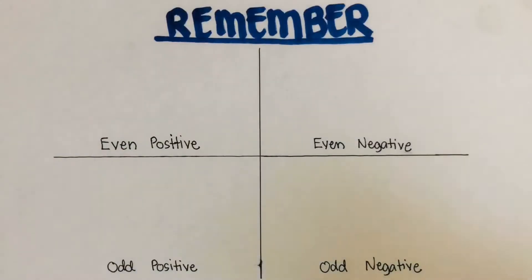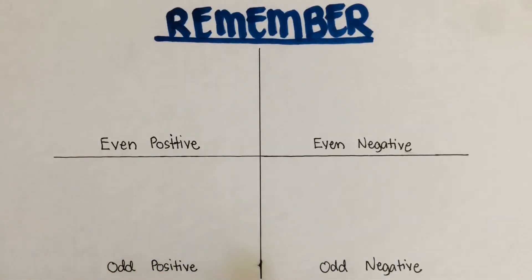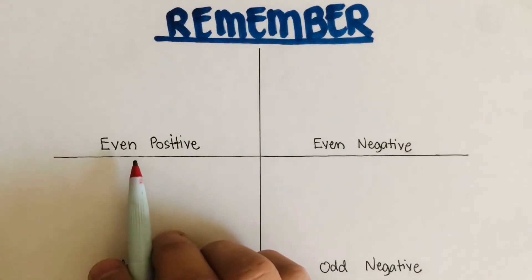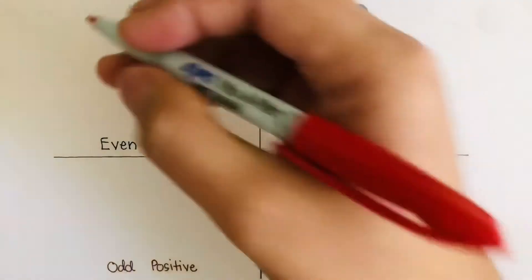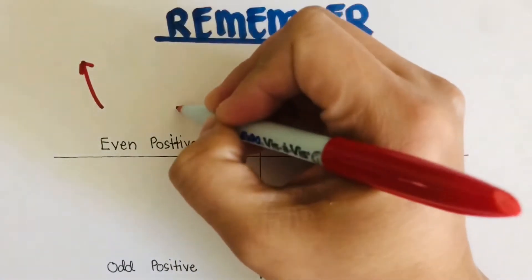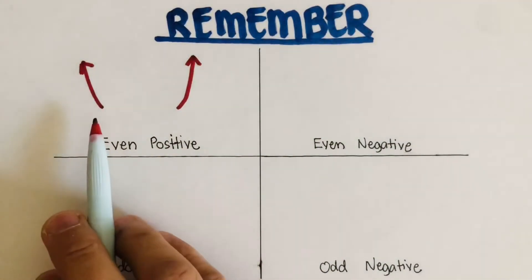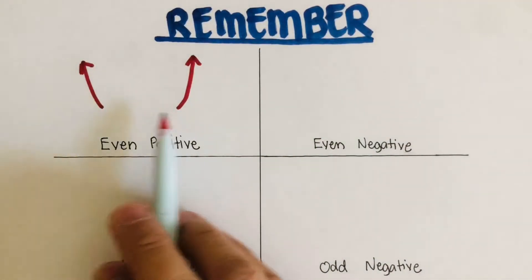A graph of every polynomial function can be classified into four types: even positive, even negative, odd positive, and odd negative. A graph of a polynomial function is even positive if the left end is directed up and the right end is directed up — so both ends point upward.